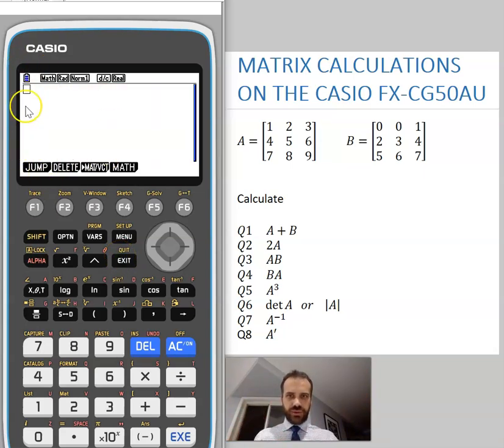Now we're going to do all of those calculations. And the way that we do it is by clicking our option here. And then when we click option, a different MAT VCT comes up. It's not the same, even though it's labeled the same.